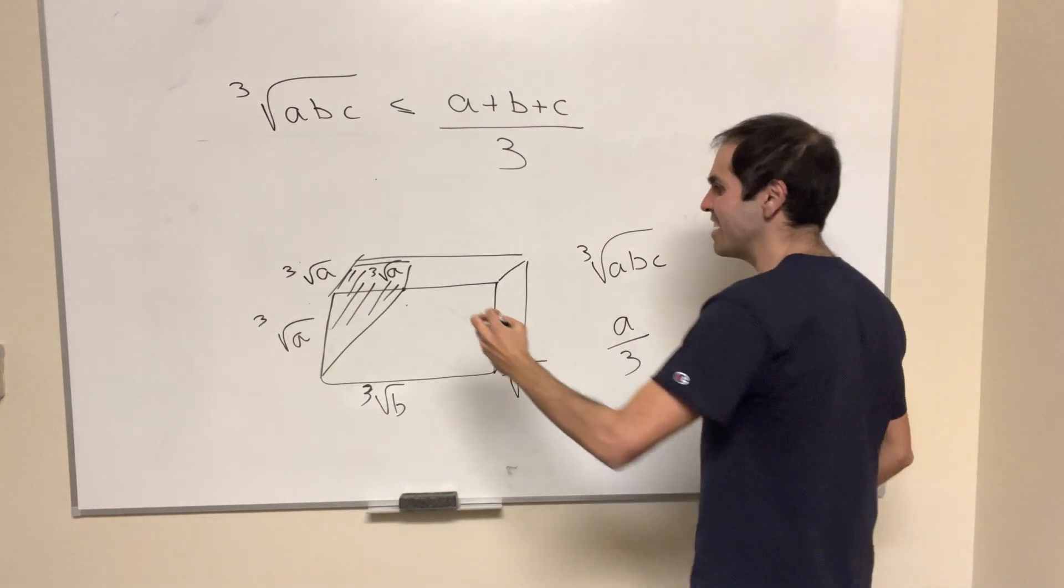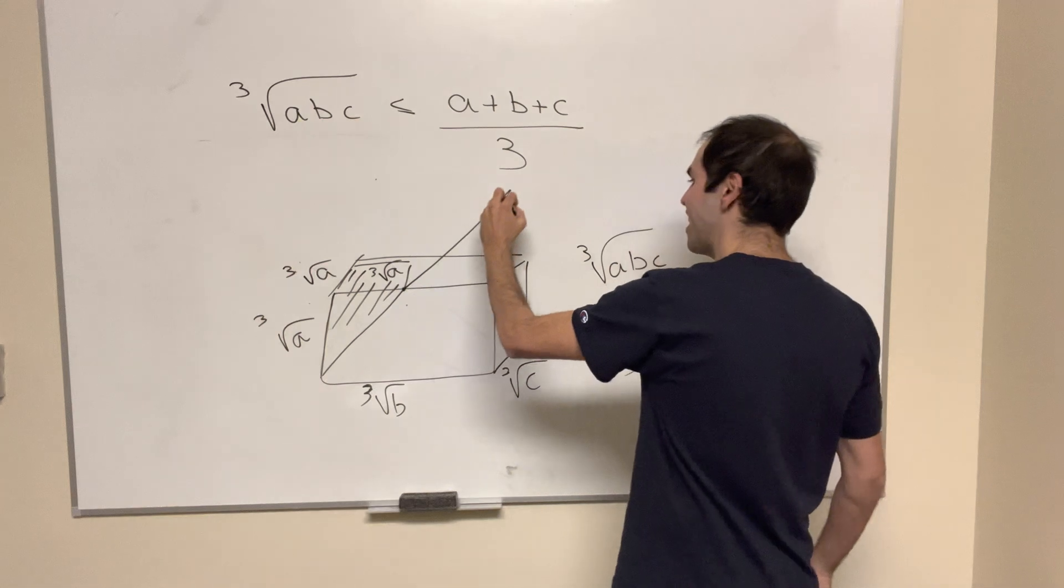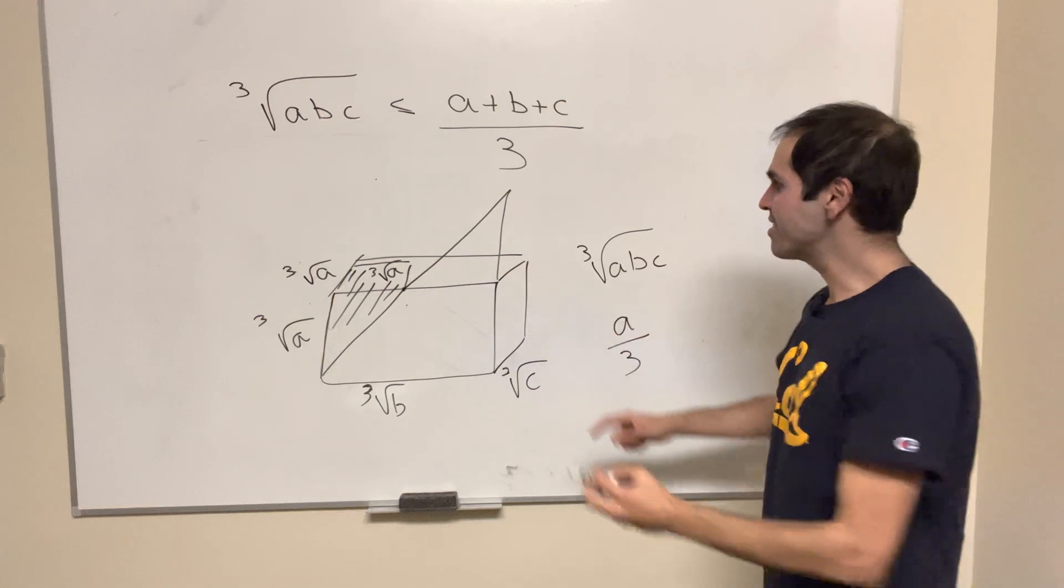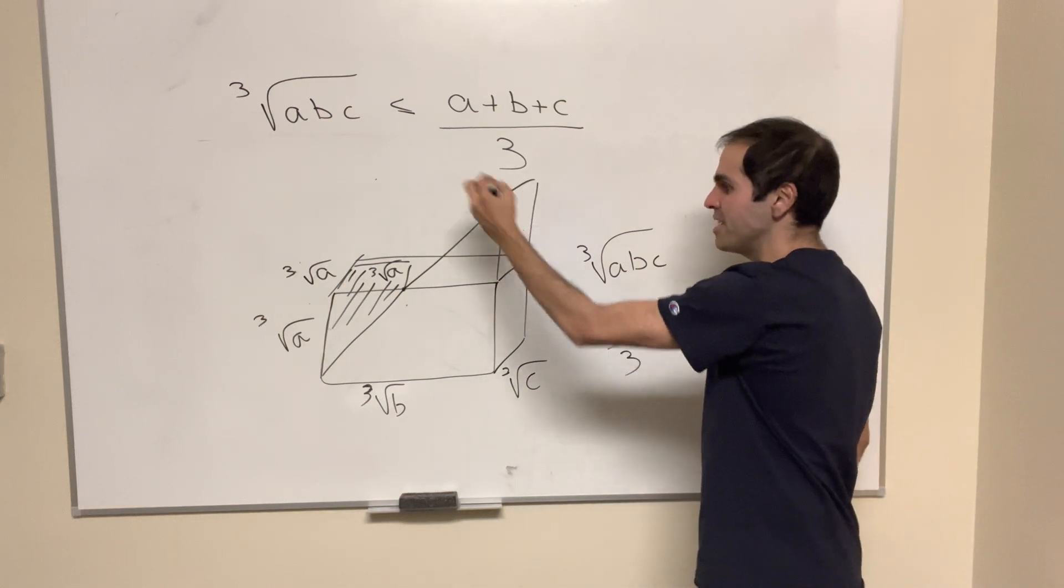And probably by extension, you could extend it that way and then get another prism in this case with cube root of d, maybe like that.